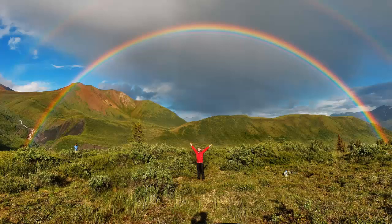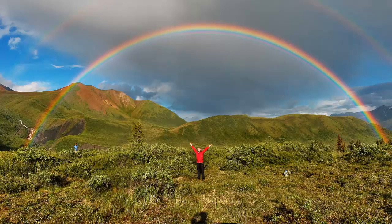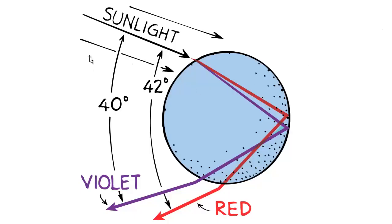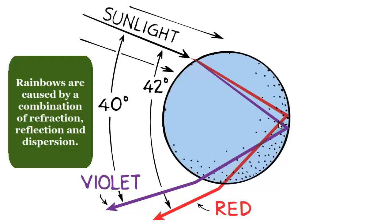A neat example of dispersion is the rainbow. When you have your back to the sun and there's water in the air - from rain or washing the car - you'll see a rainbow. When sunlight hits a raindrop from above, the different colors like red and violet enter the raindrop, are reflected off the back wall, and refracted back out.